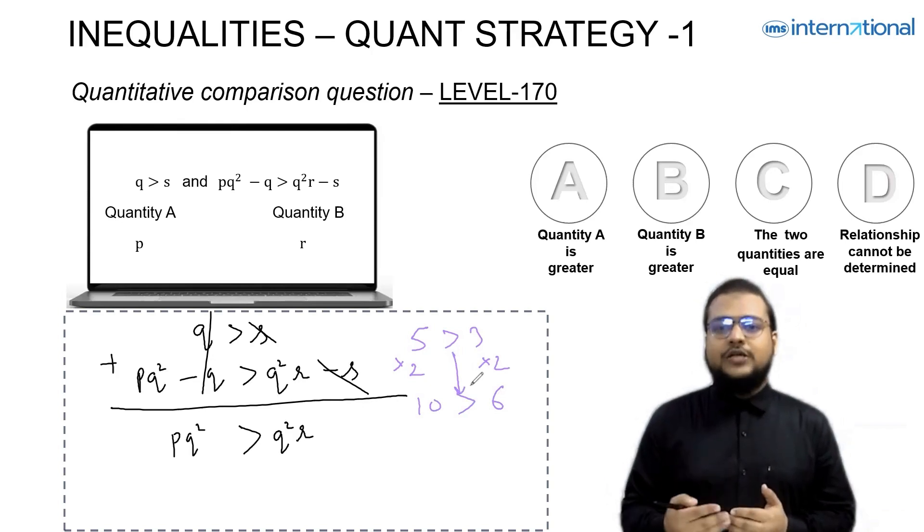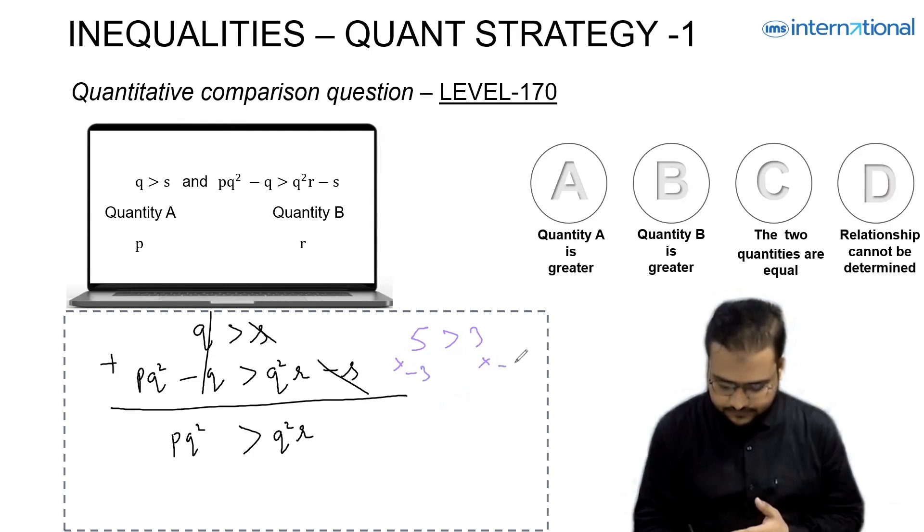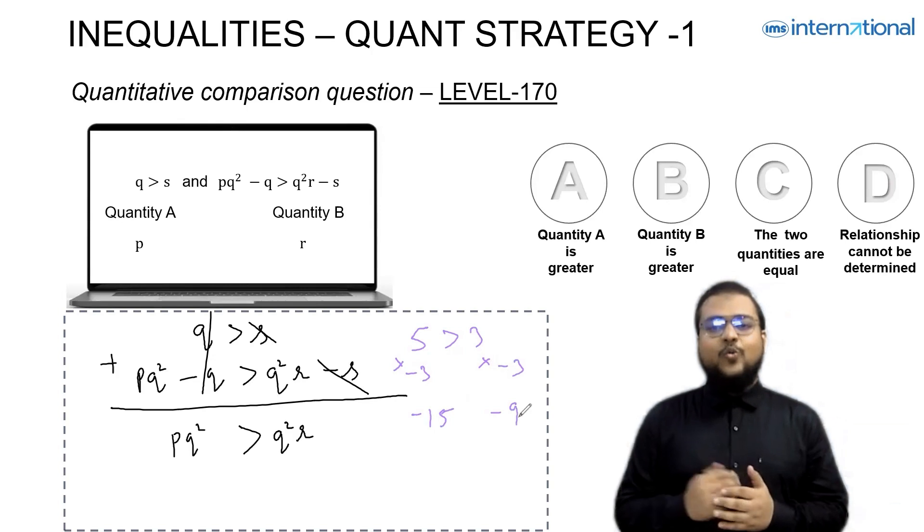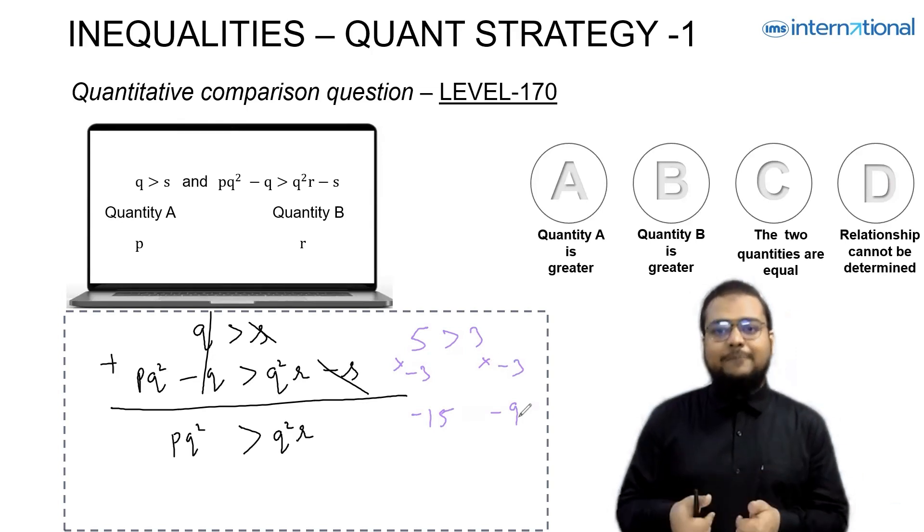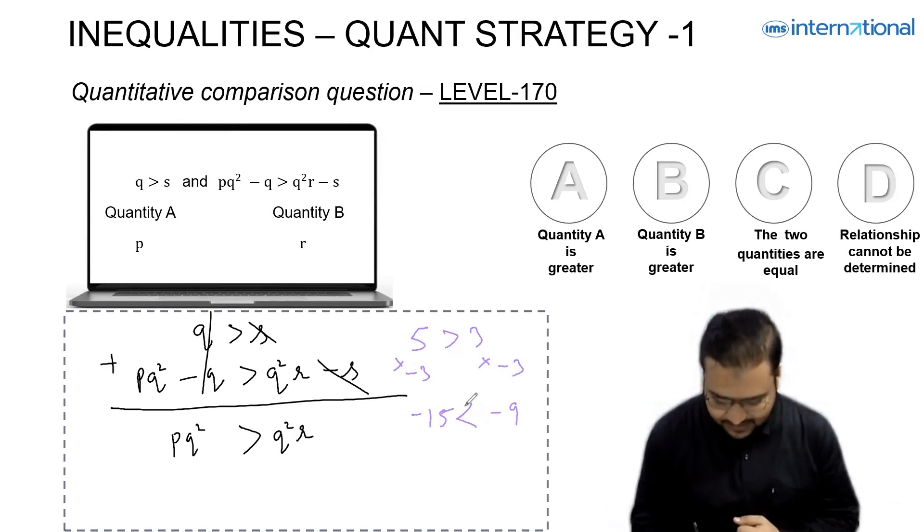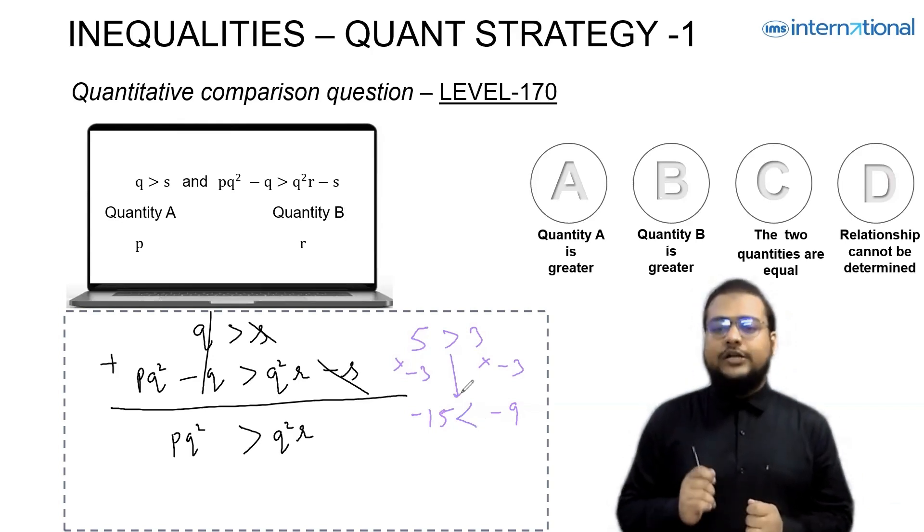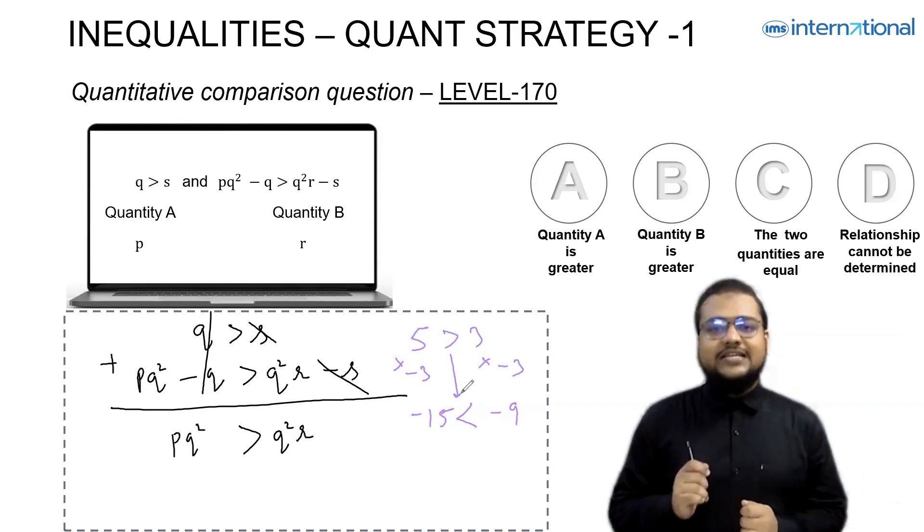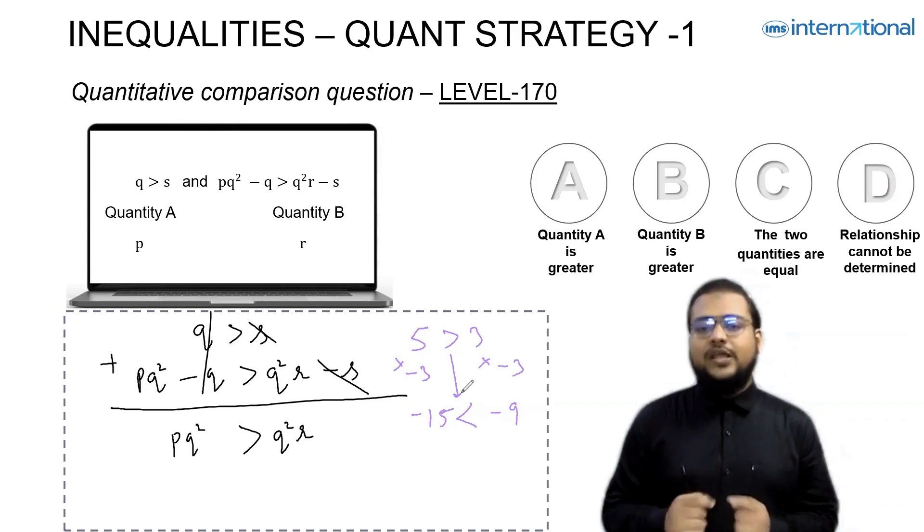Let me give you an example. Five is greater than three. If I multiply two on both sides, I can keep the sign the same because I multiplied with a positive constant. What happens if I multiply both sides by a negative number? Let me multiply now minus three on both sides. Now tell me which number is greater, minus fifteen or minus nine? Minus nine is greater. So what happened to the inequality sign? It got flipped. Hence, you have to remember this hack. Whenever you multiply or divide by a positive number, the inequality sign will remain the same. But when you divide or multiply by a negative number, then the sign will invert.